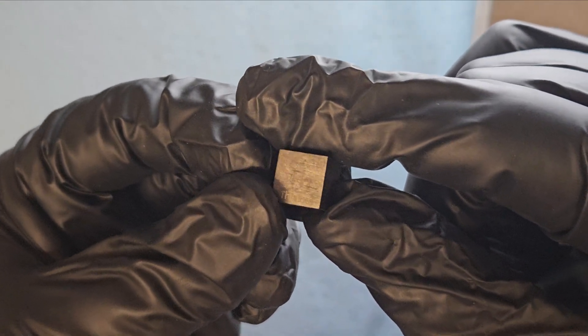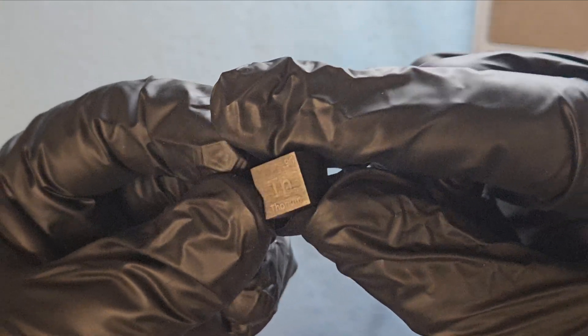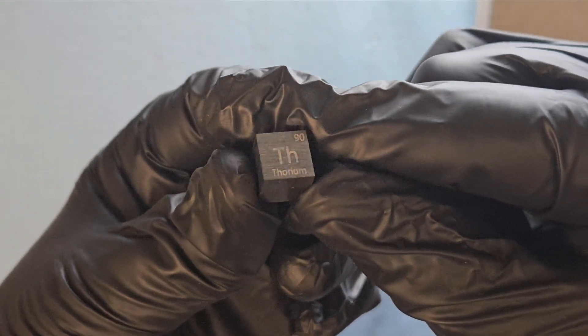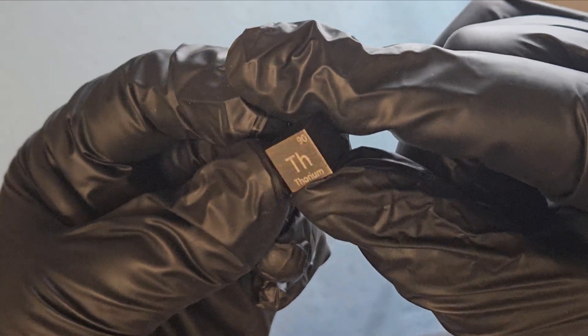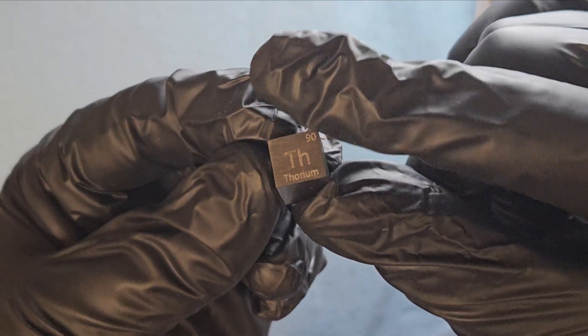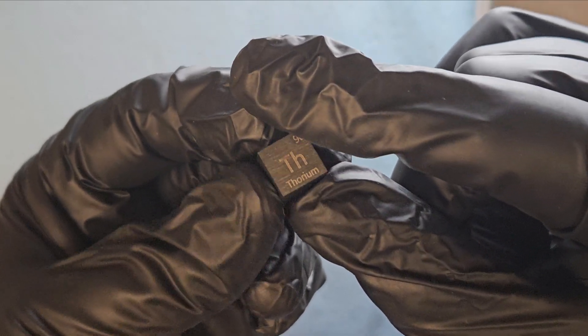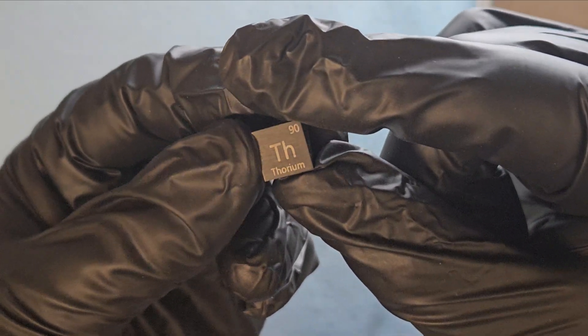The funny thing is we sell this at $1,500 a gram, but in order to make this cube we had to send in 21 grams. The density of thorium metal is only 11 grams and change, the same as lead, but we need to send more in.